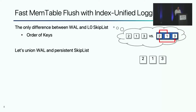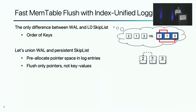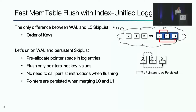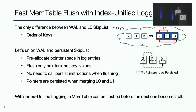To union WAL and persistent skiplist, we pre-allocate skiplist pointer space in log entries. When a memtable is flushed, only the pointers are written to the log entries, and then the log entries become a skiplist. We do not persist the pointers when flushing a memtable because the elements of the level 0 PM table are also log entries and the key order can be recovered. The pointers are persisted when merging level 0 and level 1 PM tables. With this approach, a memtable can be flushed before the next memtable becomes full.